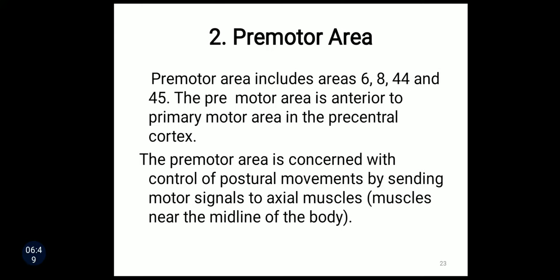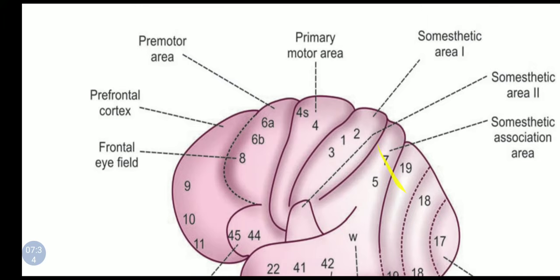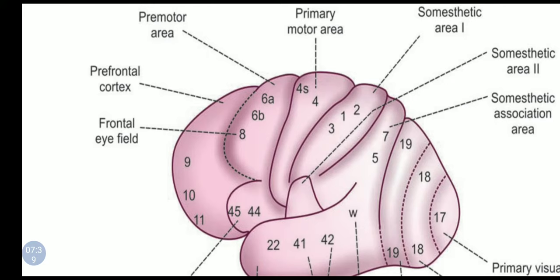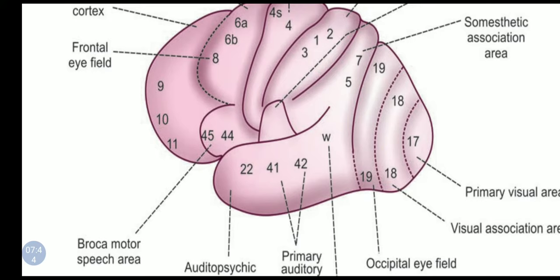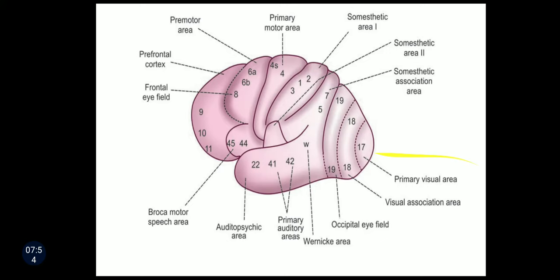Next we go to the premotor area. The premotor area includes four areas: area number six, eight, 44, and 45. The premotor area is anterior to the primary motor area in the precentral cortex. It is concerned with control of postural movements by sending motor signals to axial muscles — the muscles near the midline of the body. You can see the premotor area includes area six, which is subdivided into six A and six B, area eight, and Broca's area consisting of area 44 and 45.